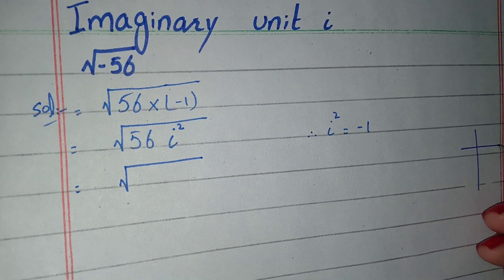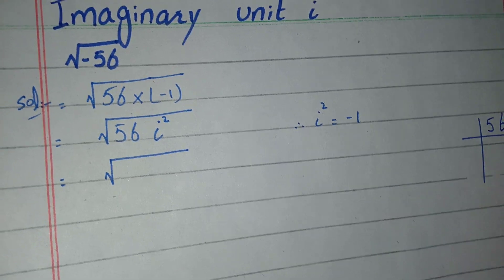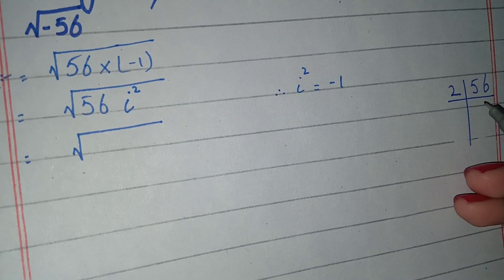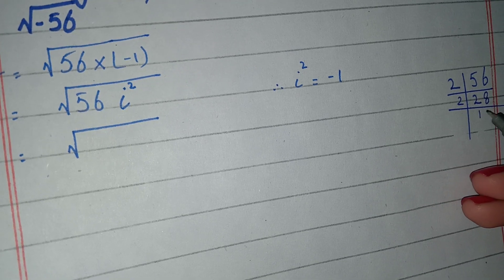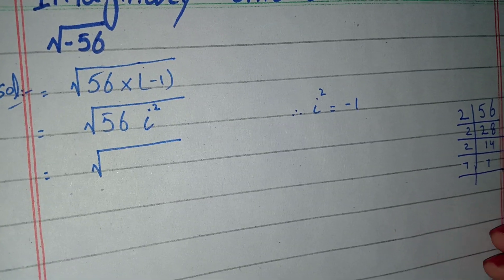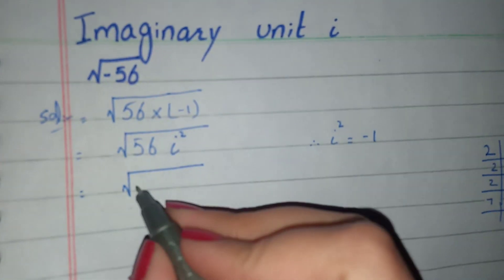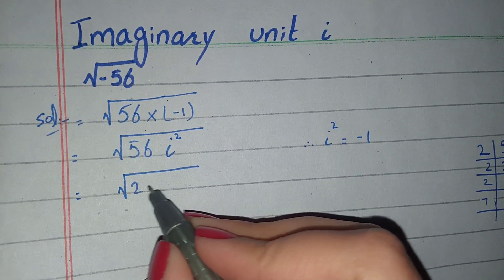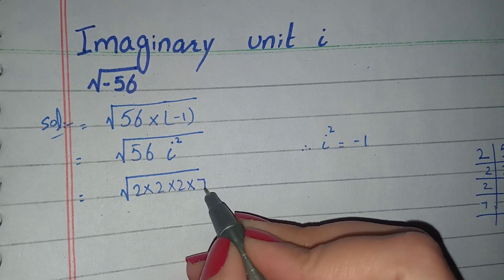Now I will find the prime factors of 56. The prime factors of 56 are 2 × 2 × 2 × 7. So in place of 56 we will write its prime factors: 2 × 2 × 2 × 7.